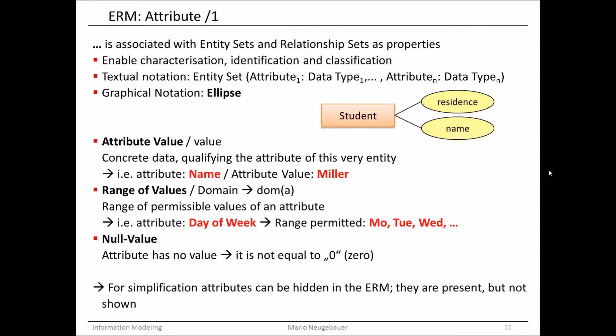Different entities of students — Max Miller and other students — can have different properties, different values in these attributes. For example, different names or different addresses. So this is the graphical representation, the entity-relationship diagram.